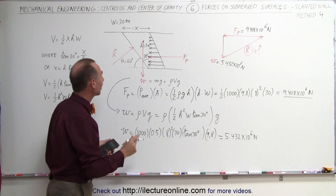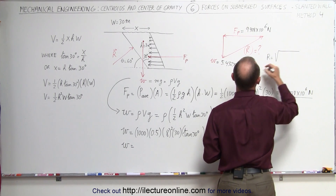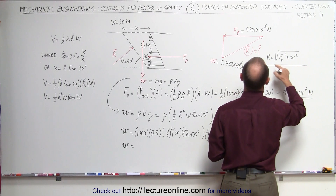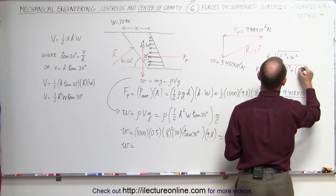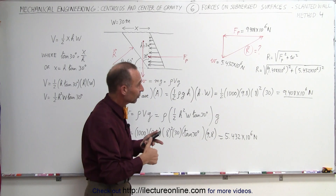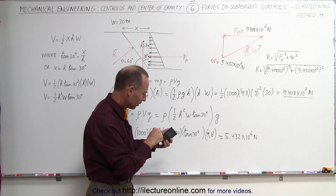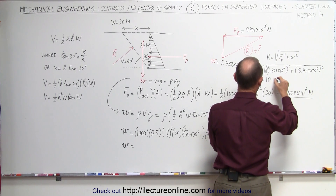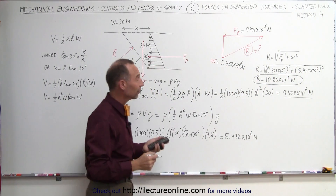Now to find R, the magnitude of the force on the wall, R equals the square root of the sum of the squares of the two components: F sub p squared plus W squared. So R equals the square root of (9.408 times 10 to the sixth) squared plus (5.432 times 10 to the sixth) squared, and taking the square root we get a total value for R equal to 10.86 times 10 to the sixth newtons, which again matches the number we got in the previous examples.